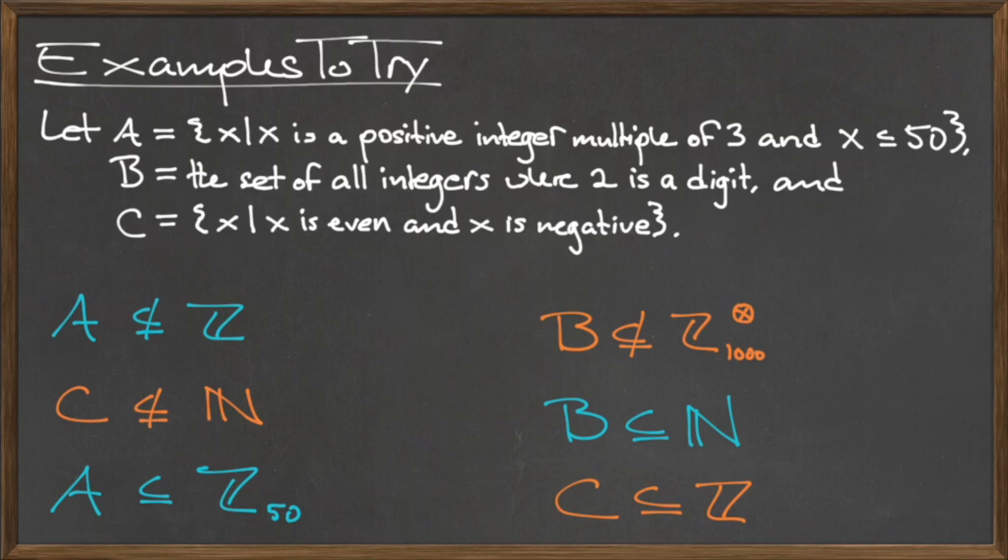Define B to be the set of all integers where 2 is a digit, and define the set C to be the set containing all elements x, such that x is even and x is negative. Determine if the following subset statements are true or false.